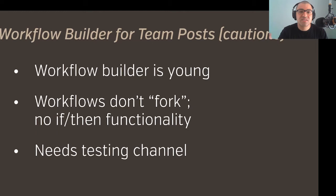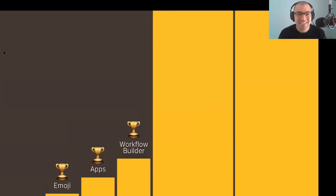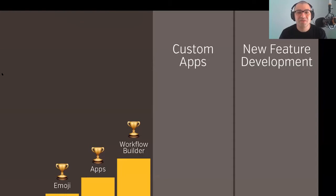So three wins: built-in emoji just below the surface, built-in apps a fingertip away, and Workflow Builder accessible to everyone — just play with it a bit. These are three communication wins to administer your Slack workspace. Now I want to open the door to something even bigger: custom apps and new feature development — things that could potentially be built into Slack down the road to enhance the experience. I'll toss to my colleague Dr. Milhaze, who will show you how these can be approached.